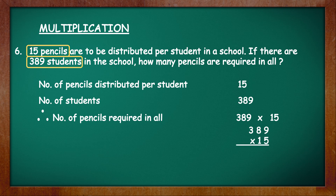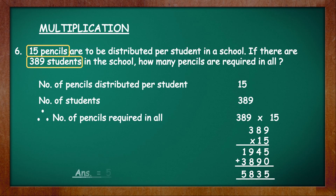Therefore, number of pencils required will be 389 into 15. Arrange the numbers for the multiplication: 389 multiplied by 15. We will do long multiplication here. 389 into 5 is 1945. Then write 0 and multiply by 1: 389 into 1 is 389, and when we add both the numbers, we get 5835. The answer is 5835 and the unit is pencils.